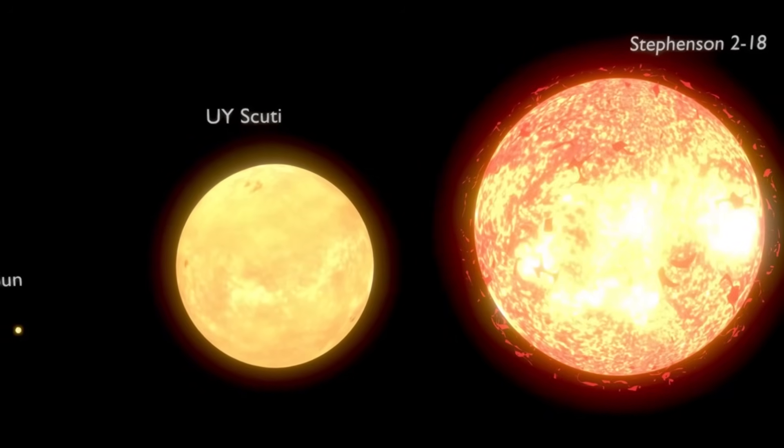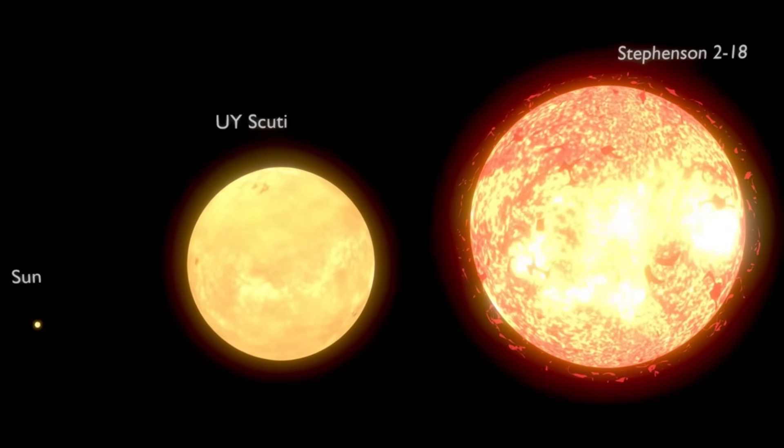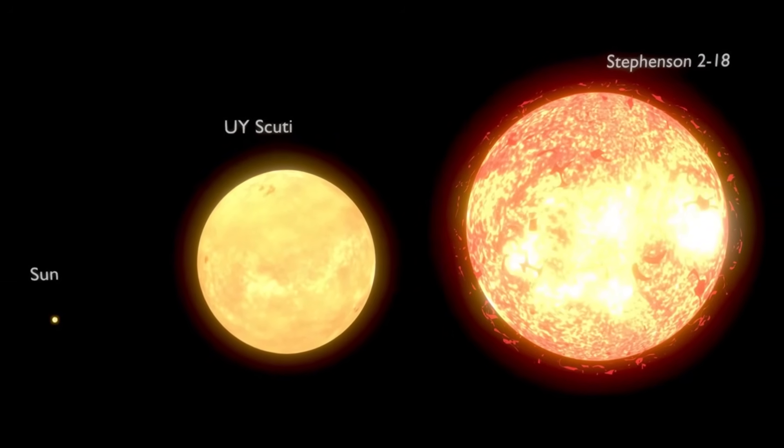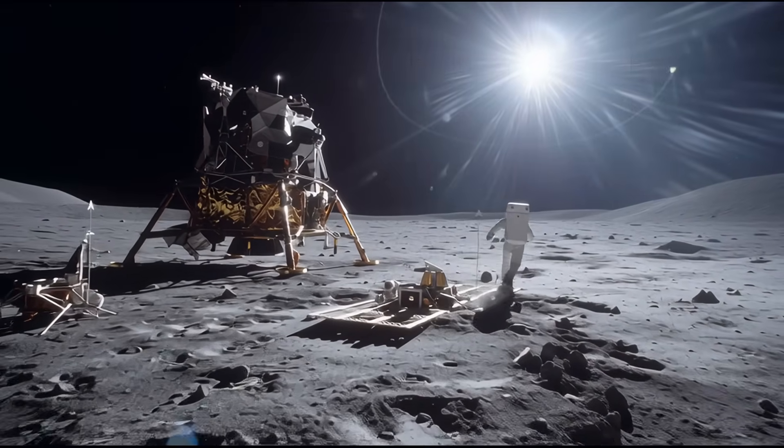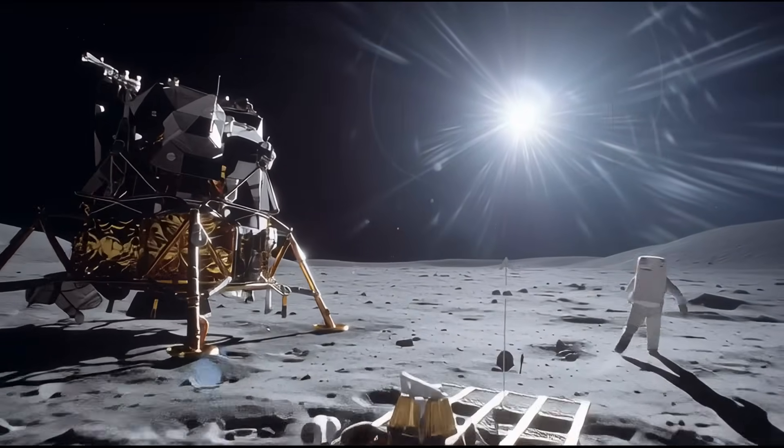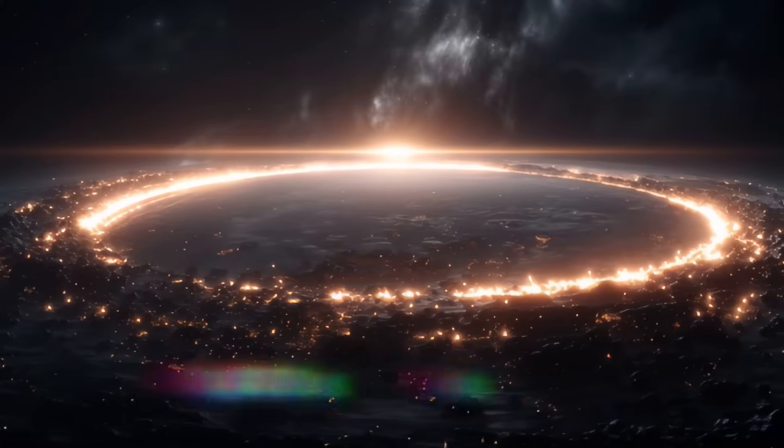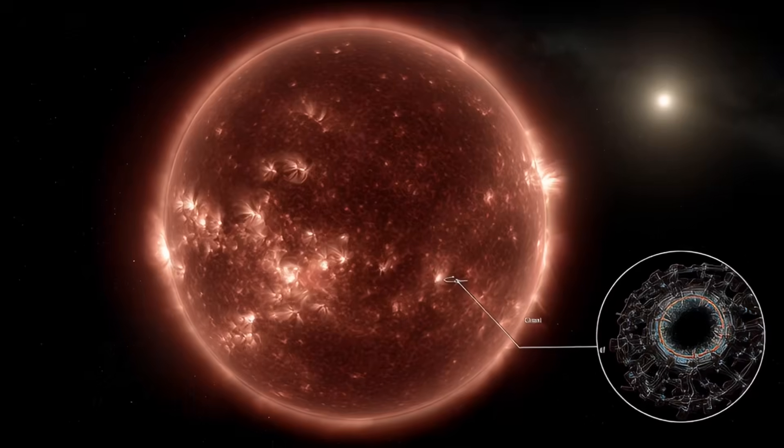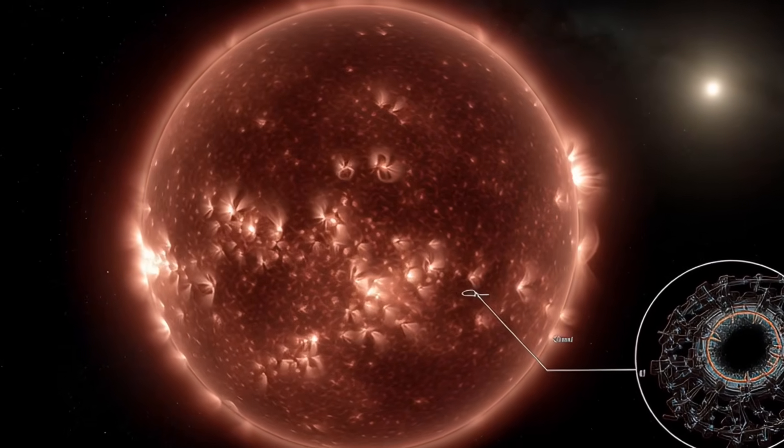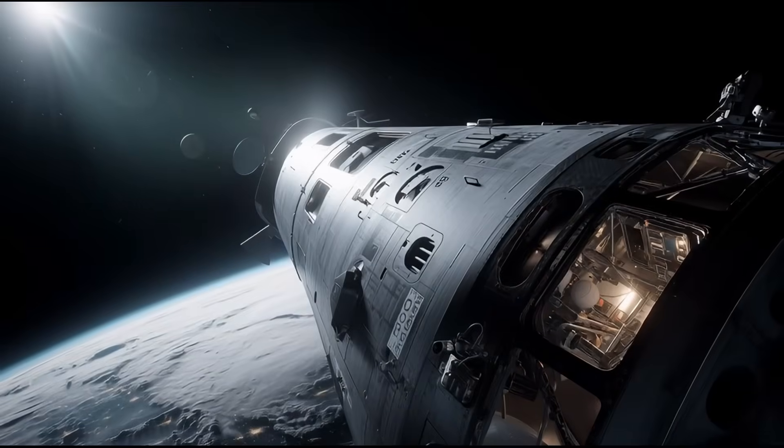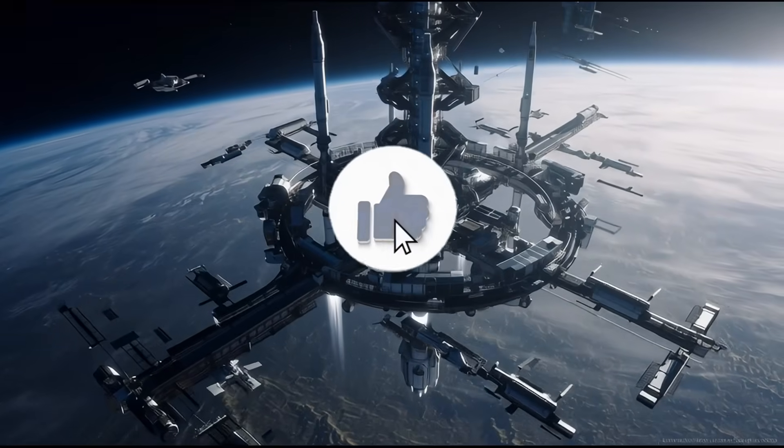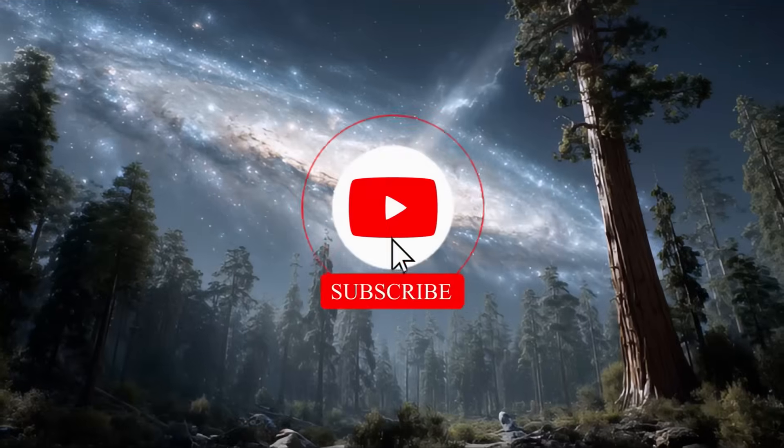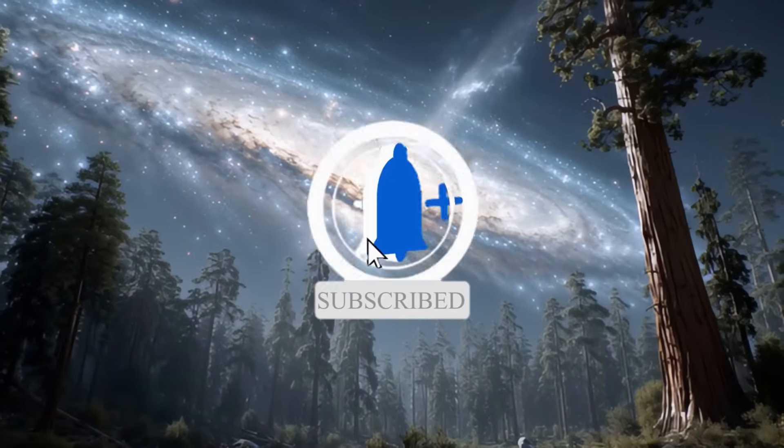Stevenson 2-18 swooped in and claimed the crown. And here's the thing that bothers some astrophysicists. Stellar evolutionary theory suggests there should be a maximum size limit for stars at around 1,500 solar radii. Our new champion apparently didn't get that memo. If you're loving this cosmic journey through the biggest things out there, do me a solid and smash that like button. Trust me, we're just getting warmed up here.